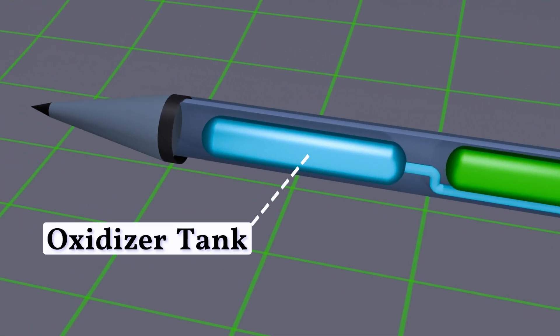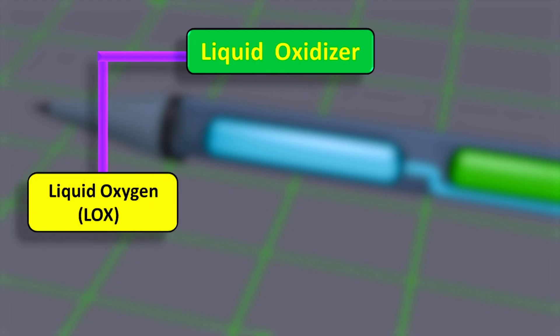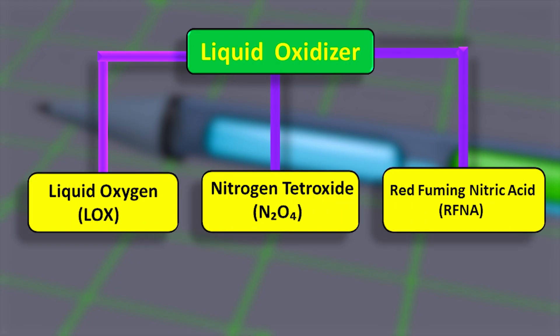This is the liquid oxidizer tank. In any military missile, very high energy oxidizers are used. Examples include liquid oxygen, nitrogen tetroxide, or red fuming nitric acid.